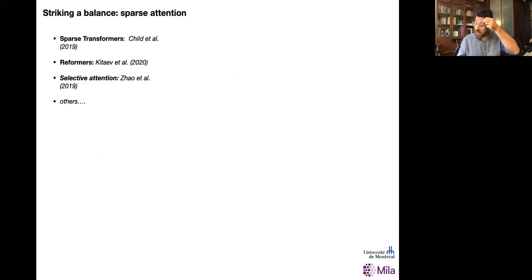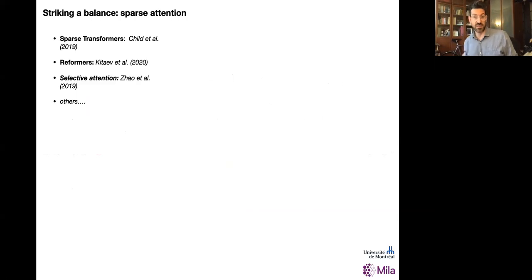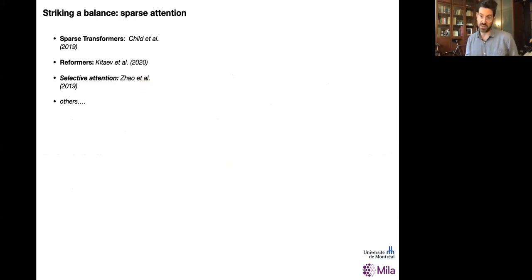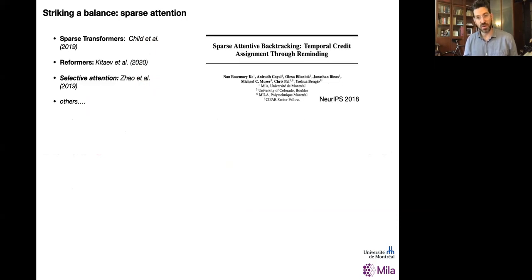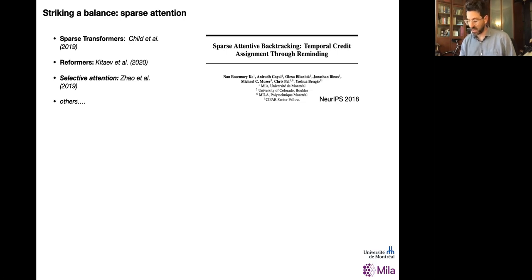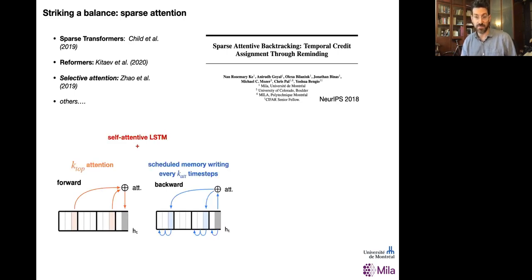In the hopes of striking a balance, there's this push to sparsify attention in the context of recurrent self-attentive networks. I'd like to introduce a very recent paper that led to the formal representations I'm going to discuss — the idea of sparse attentive backtracking, a very simple way to sparsify self-attention in a semi-parametric model.